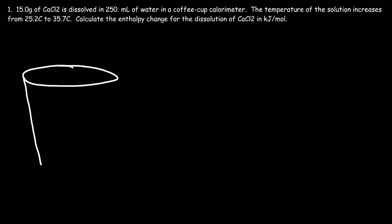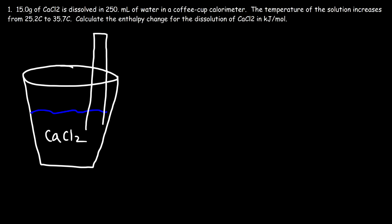Basically what we have is a styrofoam cup. Styrofoam is a good thermal insulator — it's going to prevent heat from flowing into or out of the coffee cup calorimeter. We have some water, we dissolve calcium chloride into the solution, and we have a thermometer placed inside. The styrofoam cup is sealed, and you may need two cups to increase the insulation. Ideally it's not perfect, but it works pretty well.